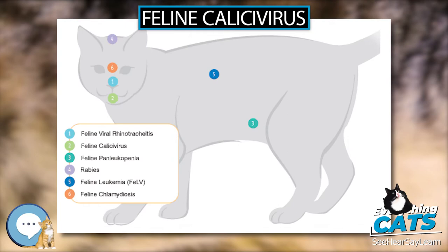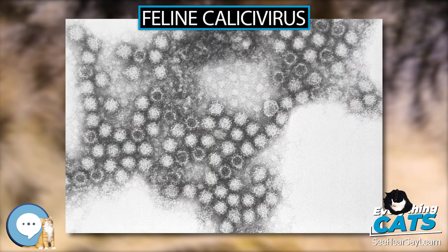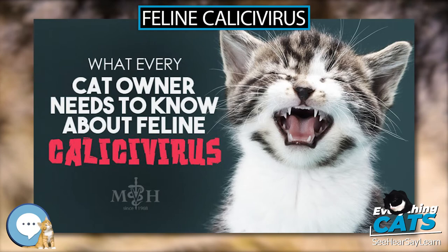The prevalence of FCV varies depending on the environment. In private households, FCV is present in about 10% of cats, either in active or carrier state, while the prevalence in shelters or catteries is 25–40%. FCV replicates in the oral and respiratory tissues, and is secreted in saliva, feces, urine, and respiratory secretions.